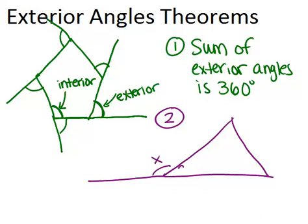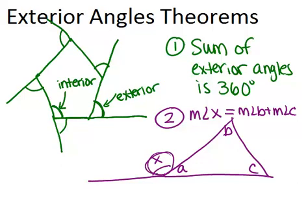So I'm going to draw a triangle and one exterior angle over here, which I'm going to call X. In the triangle, the three angles I'm going to call A, B, and C. So this second theorem will say that the measure of angle X equals the measure of angle B plus the measure of angle C. In other words, an exterior angle will equal the sum of the other two angles in the triangle not touching the exterior angle.